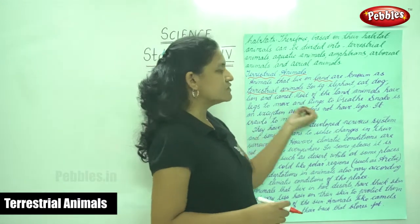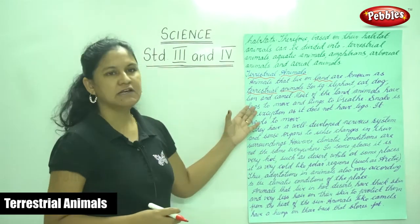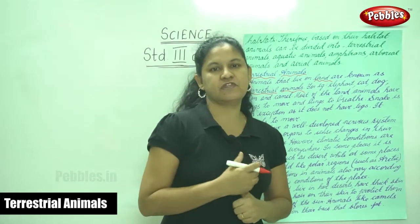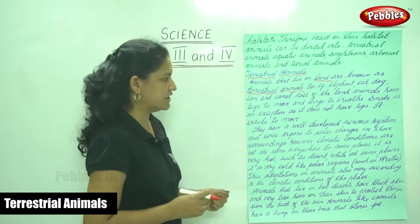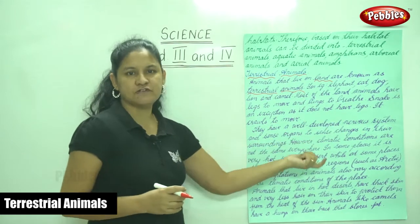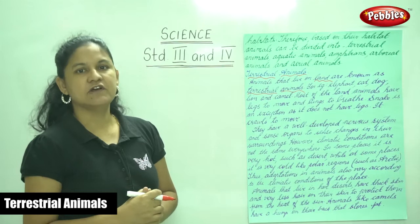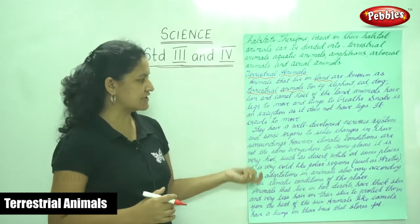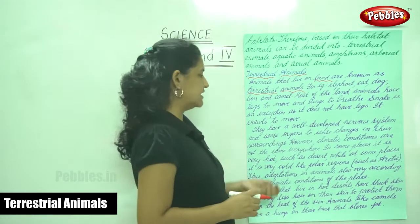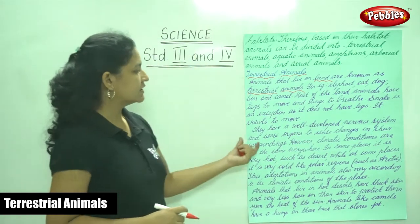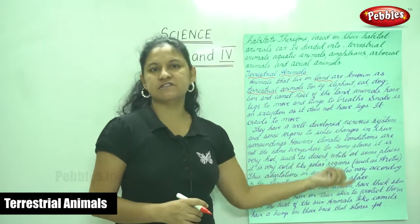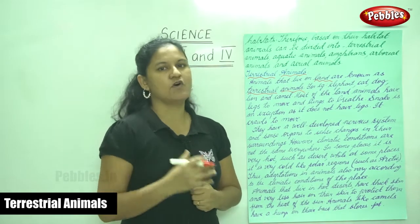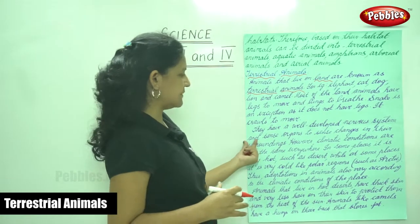Most land animals have legs to move and lungs to breathe. However, in the case of a snake, it is an exception — it does not have legs to move but instead crawls on the ground. So the snake is an exception: it does not have legs and crawls to move. Terrestrial animals also have a well-developed nervous system, just like humans.